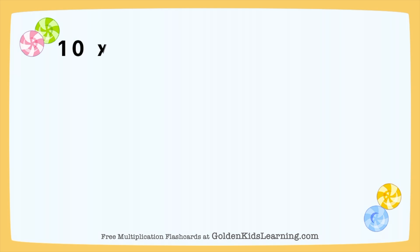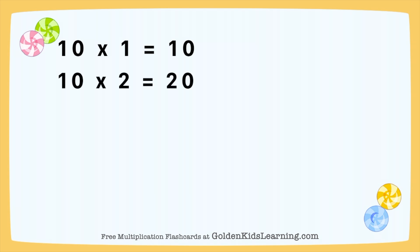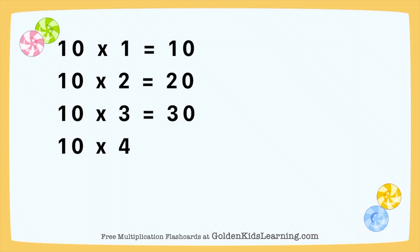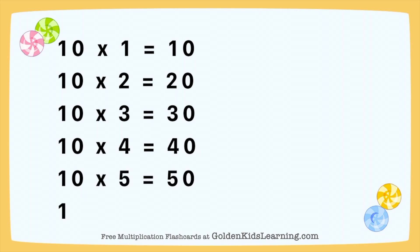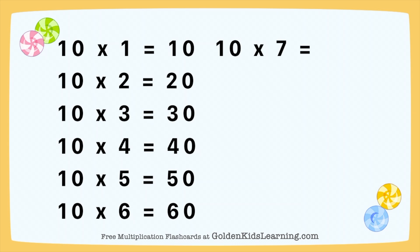10 times 1 equals 10. 10 times 2 equals 20. 10 times 3 equals 30. 10 times 4 equals 40. 10 times 5 equals 50. 10 times 6 equals 60. 10 times 7 equals 70. 10 times 8 equals 80.